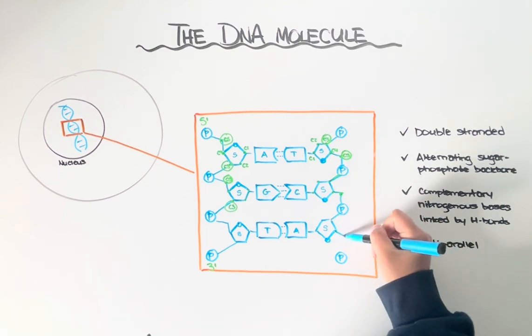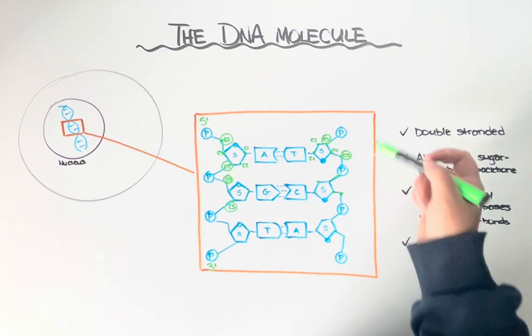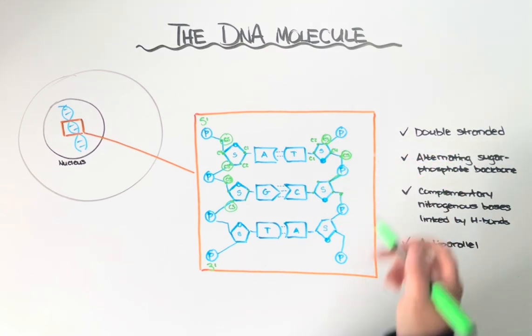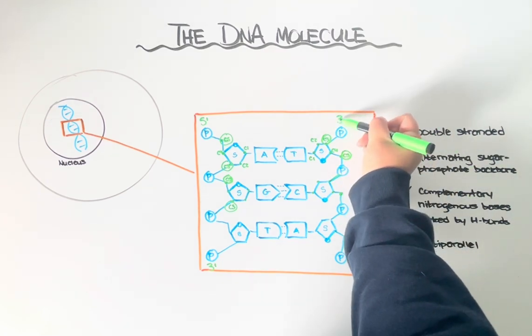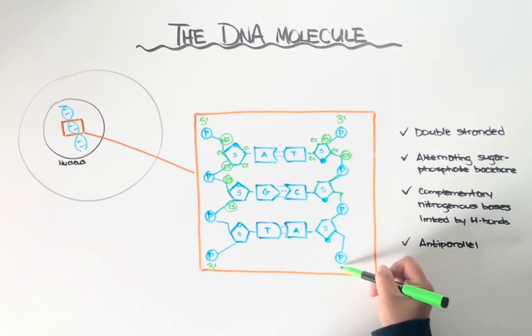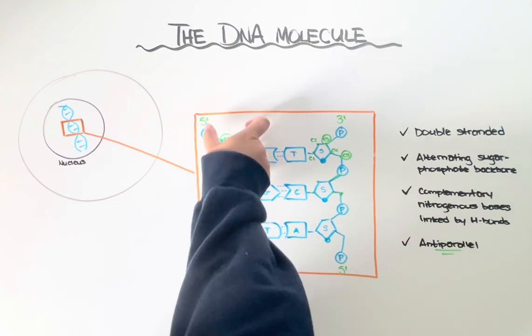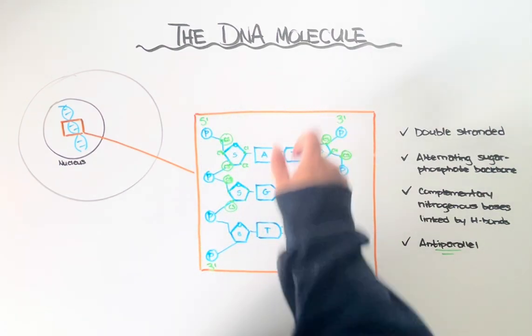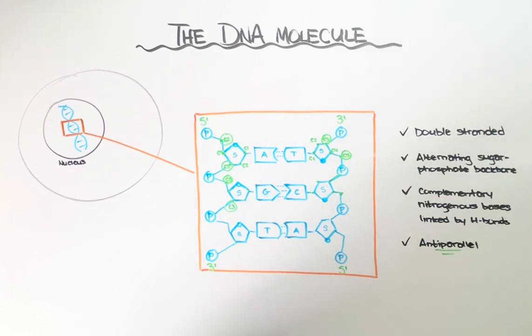Because we have a three to five, three to five, three to five pattern, we say the directionality of this strand is three prime to five prime. That's what it means when it says the DNA molecule is anti-parallel. It means that the directionality of one side of the molecule is exactly opposite of the directionality of the other side of the molecule.